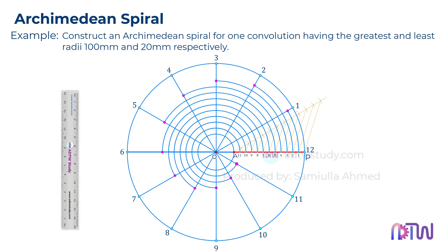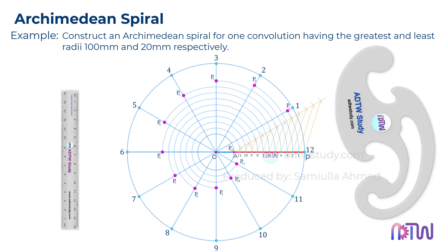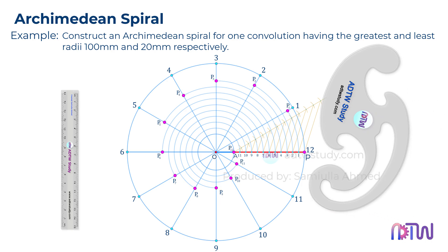After this, label these obtained points as P1, P2, P3, and so on up to P12. Remember, point P12 will also be located at point A. In the end, using French curves or freehand, join all these obtained P points to complete the curve.